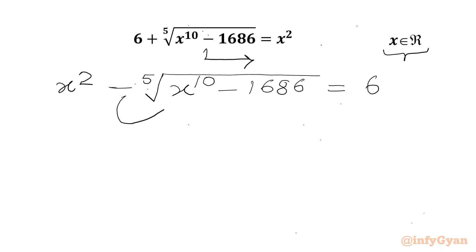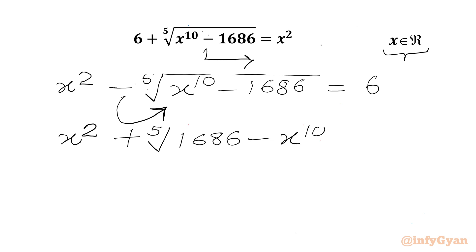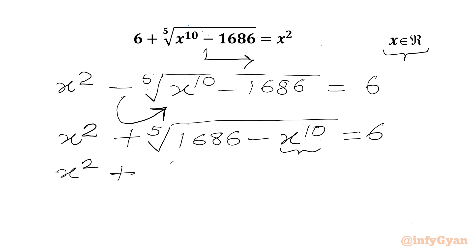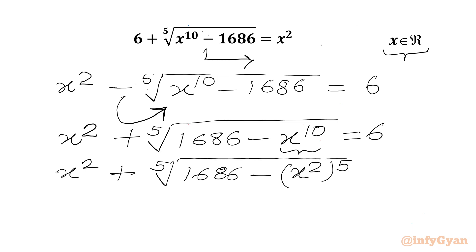Now we will take this minus sign into the radicand. So we can write the equation as x squared plus the fifth root of (1686 minus x to the power 10) equals 6. We can rewrite x to the power 10 as (x squared) to the power 5, giving us x squared plus the fifth root of (1686 minus x squared to the whole power 5) equals 6.